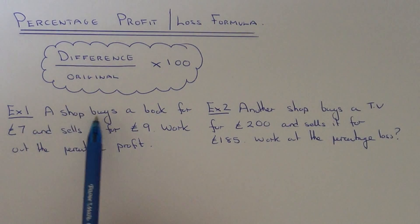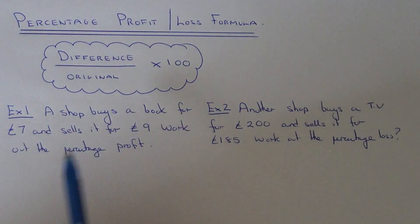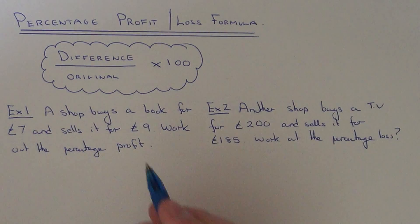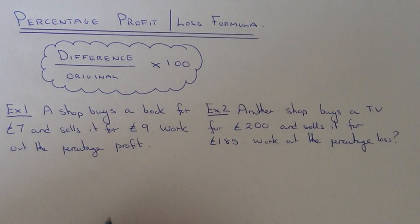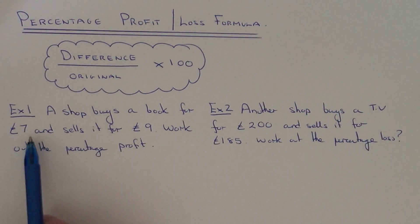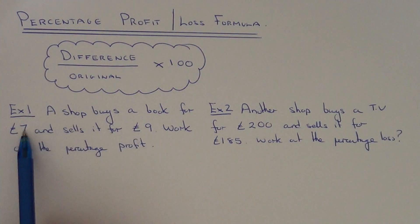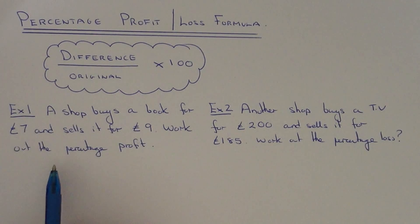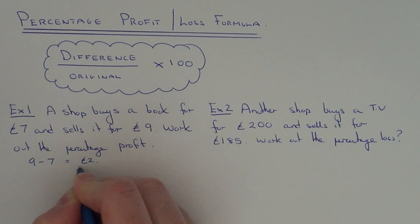In example 1, a shop buys a book for £7 and sells it for £9. We've got to work out the percentage profit. First of all, work out the difference between the cost price and the selling price. The difference between those two amounts is £2, so 9 take away 7 is £2.